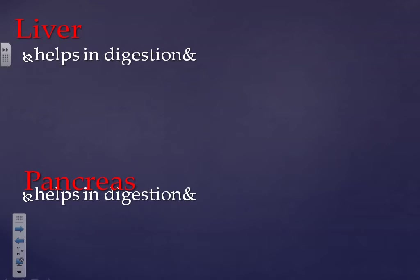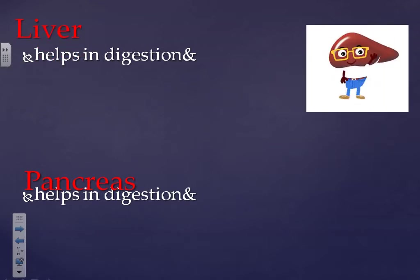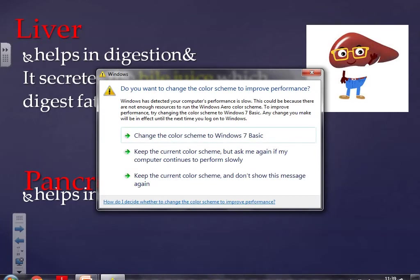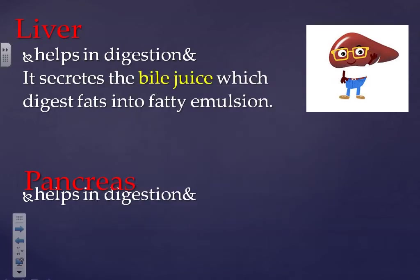The liver and pancreas are part of the digestive canal supplementaries. The liver helps in digestion — it secretes bile juice, which digests fats into fatty emulsion. Emulsion means the fat is broken down into small, simple parts. The bile juice is then poured into the duodenum.